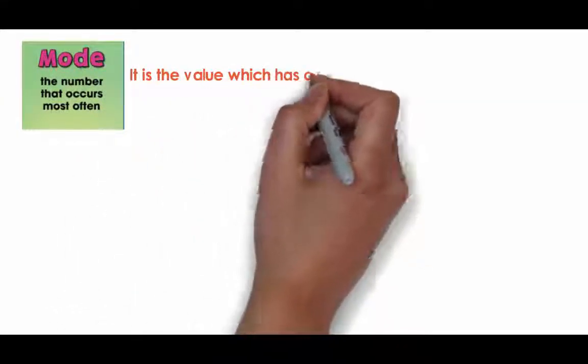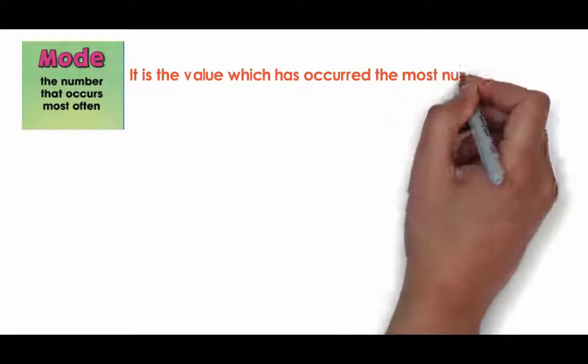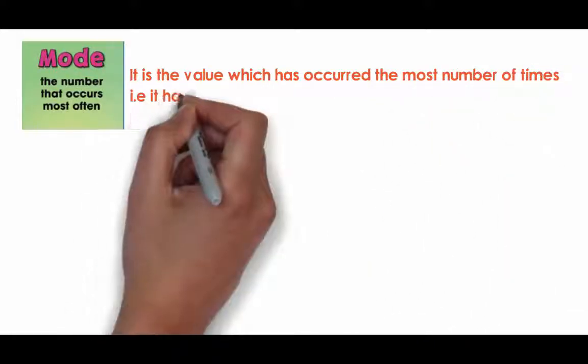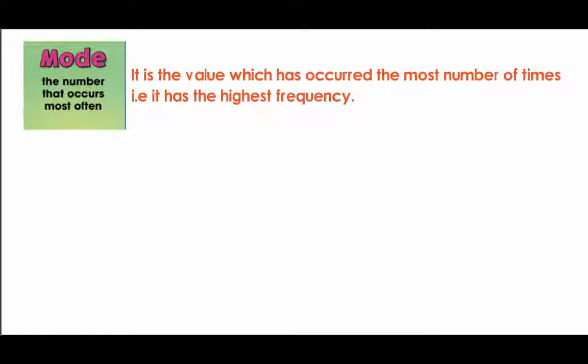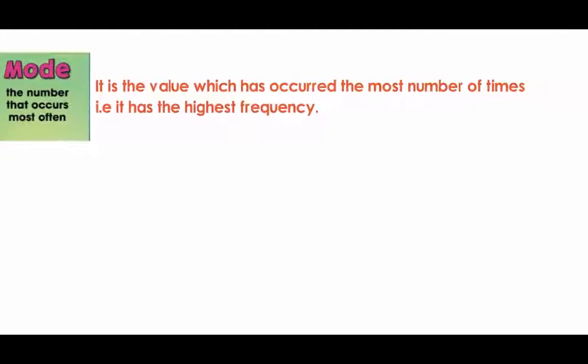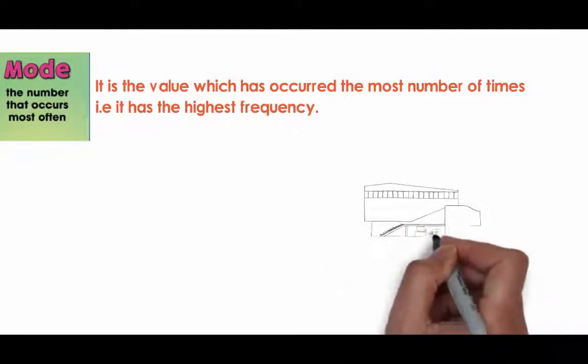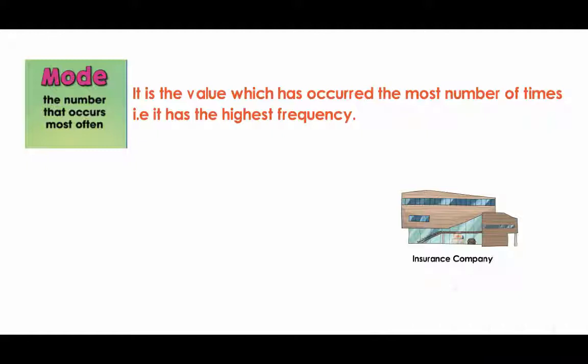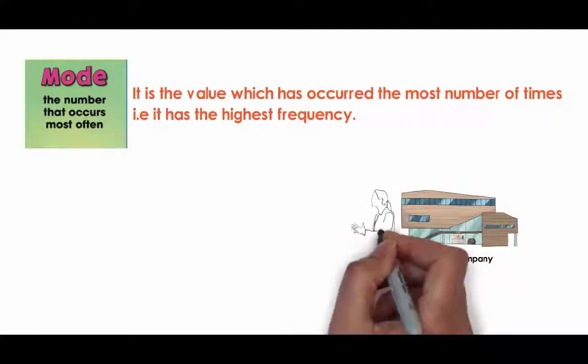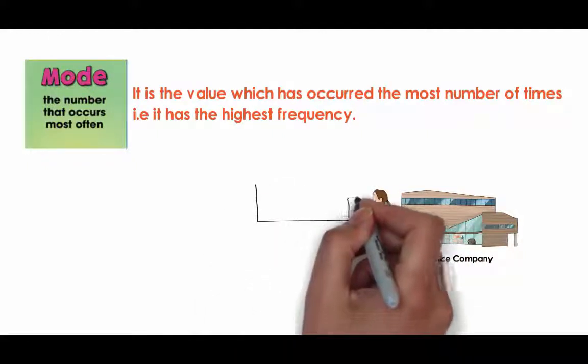Mode. The third measure of center we talk about is the mode. It is the value which has occurred the most number of times, that is, it has the highest frequency. A set of data can have no mode or more modes than one as well. It has very less application generally. For example, an insurance company may be interested in knowing which type of policy is used mostly by the policyholders.